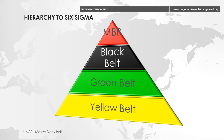The hierarchy of Six Sigma is set up much like martial arts with black belts, green belts, and yellow belts. At the top of the hierarchy are the master black belts. It is a vertical leadership model starting at the top with the executive leadership, and trickles down from the master black belts to the yellow belts.